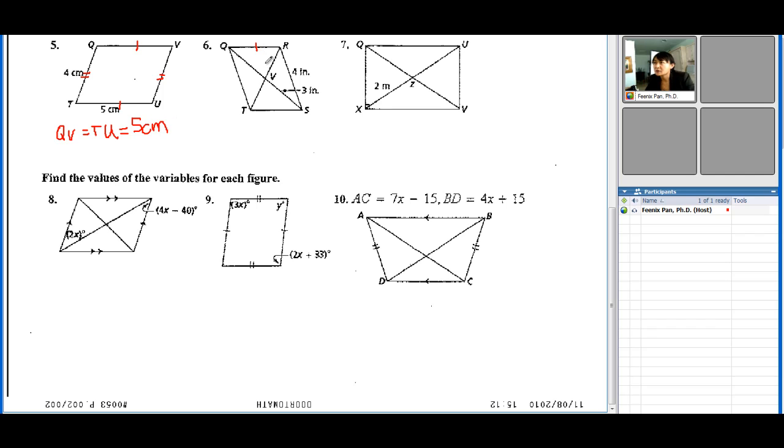Our next one, there's one set here that's congruent and parallel. We're told that VS is equal to 3 inches. The diagonals are bisecting each other at the center point, so QV is equal to VS. In this case, it's 3 inches.